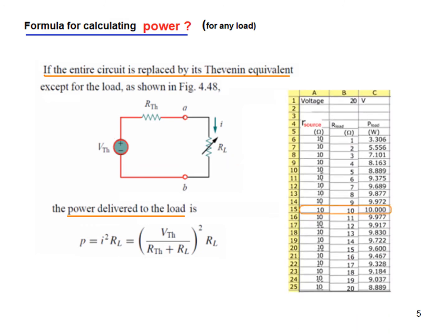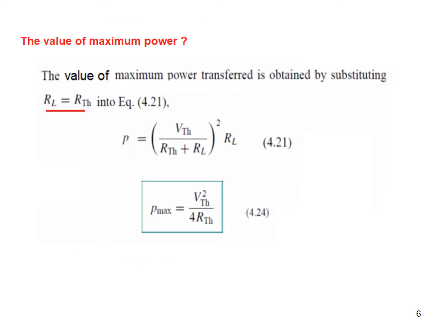For maximum power, R_load equals R_Thevenin. Substituting R_load equal to R_Thevenin into the power equation simplifies it to: P_max = V_Thevenin² / (4 × R_Thevenin), which can also be written as V_Thevenin² / (4 × R_load).